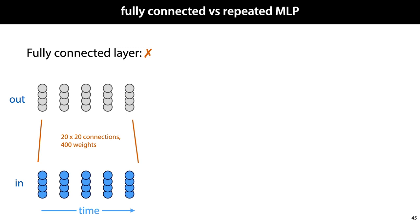Imagine that the next instance has six vectors. We wouldn't be able to feed it to this layer without adding extra weights. In short, the number of tokens in the input and output sequence is hard-coded into the network.